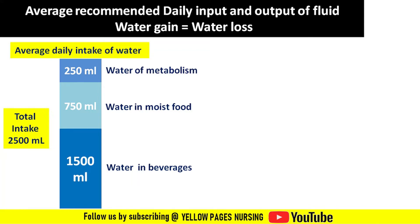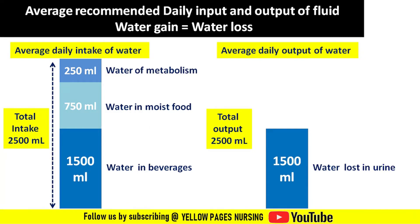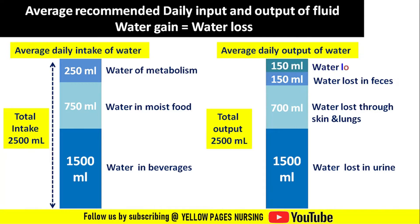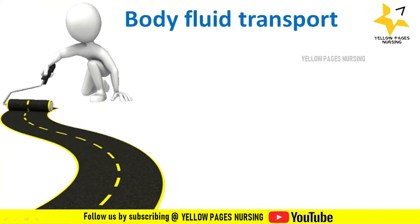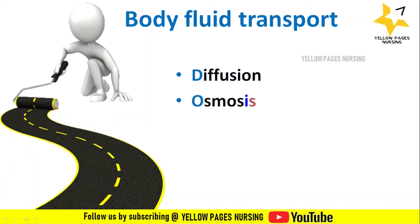The average daily output of water is 2,500 ml: 1,500 ml lost in urine, 700 ml through skin and lungs, 150 ml in feces, and 150 ml in sweat. Body fluid is transported through different ways such as diffusion, osmosis, filtration, hydrostatic pressure, and osmolality.